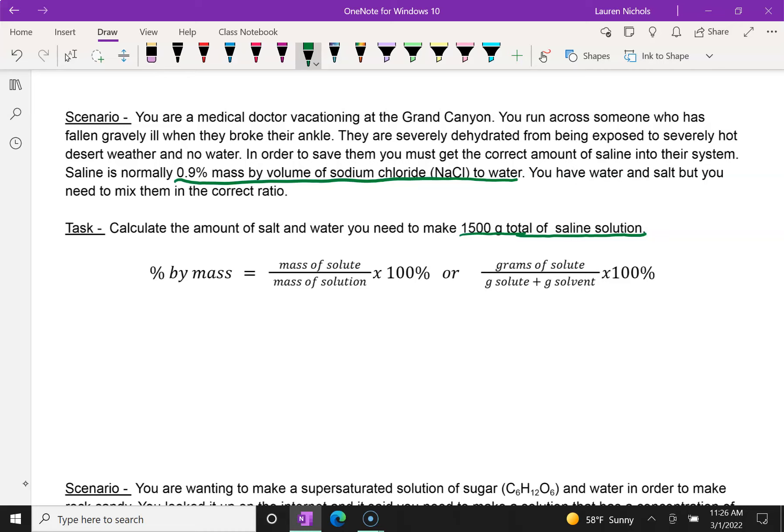So in this information we know that saline is 0.9% by mass, salt to water. And when we look at this, our formula for percent by mass is the mass of the solute, the part we're looking for, divided by the total mass of the solution times 100. Now it could also be separated depending on how they give it to you. They could give you the grams of the solute and the solvent separately, so the formula could look like this.